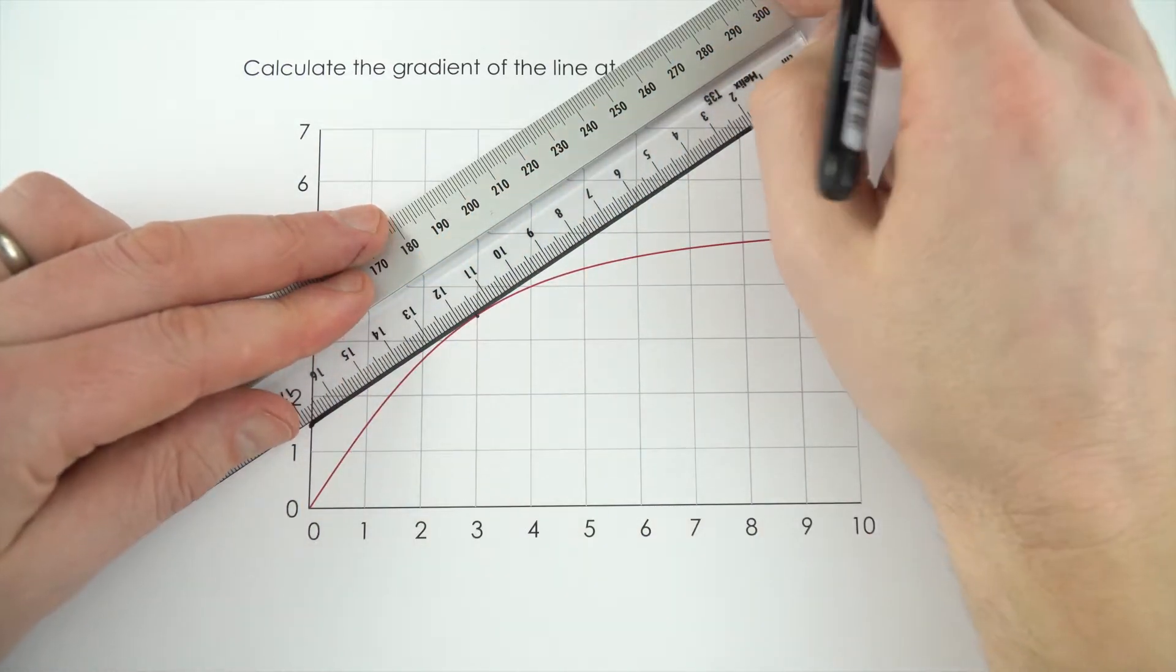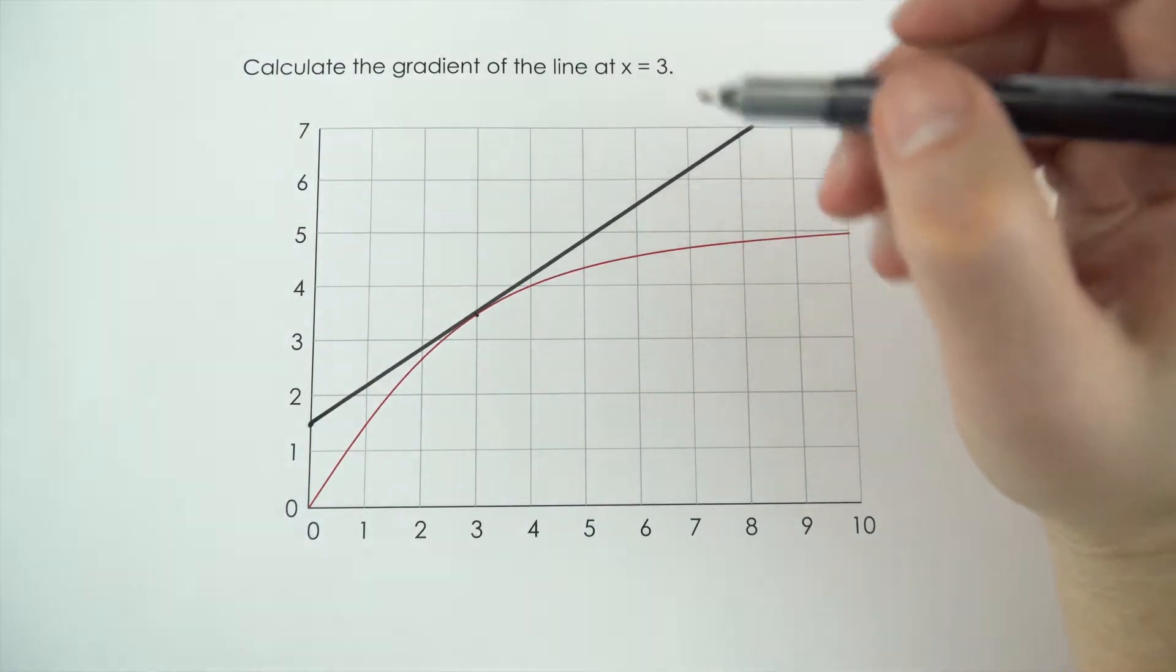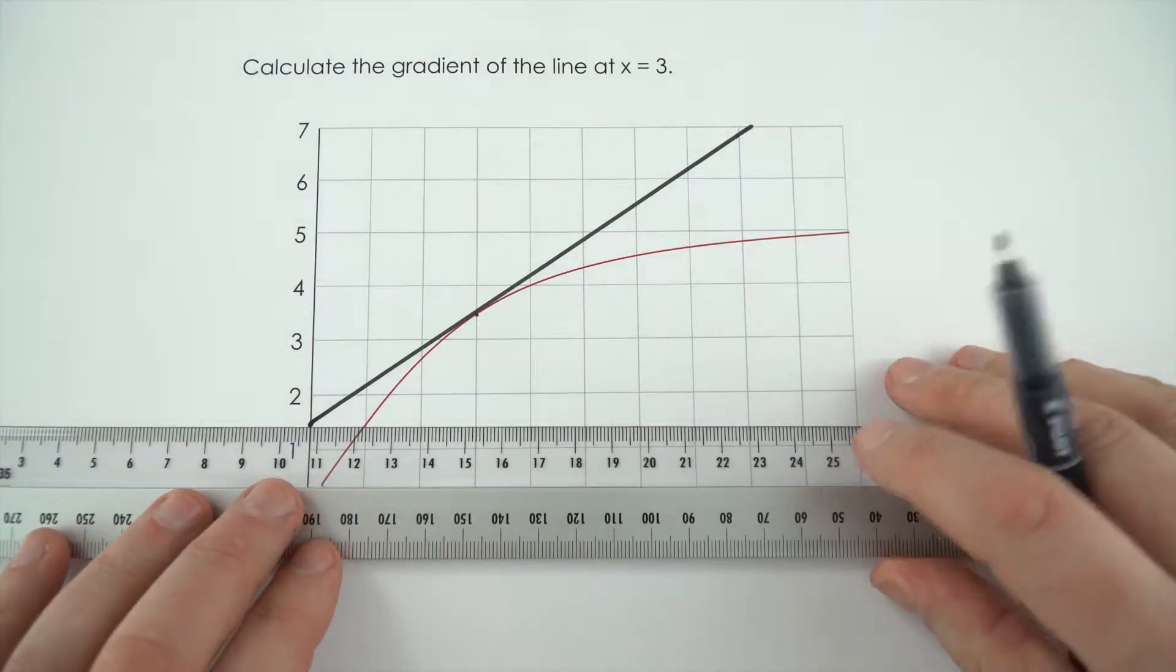making it as long as possible. What I then need to do is to work out the gradient of this black line. Again, I can do that just by drawing in a triangle.